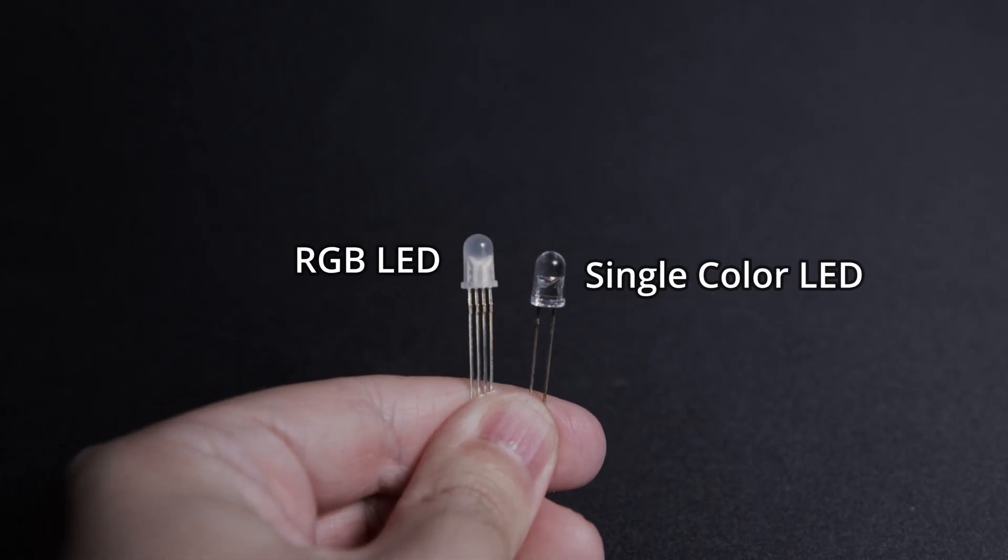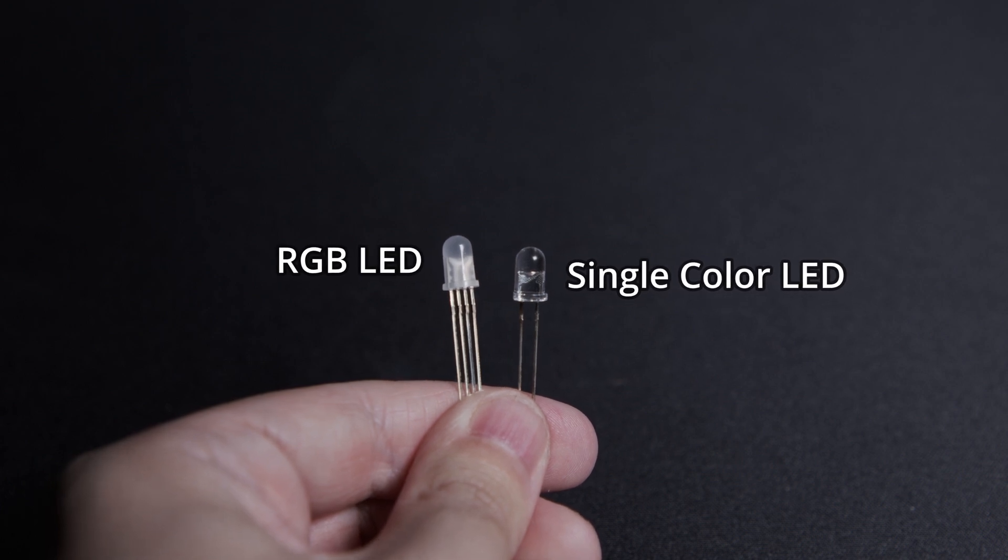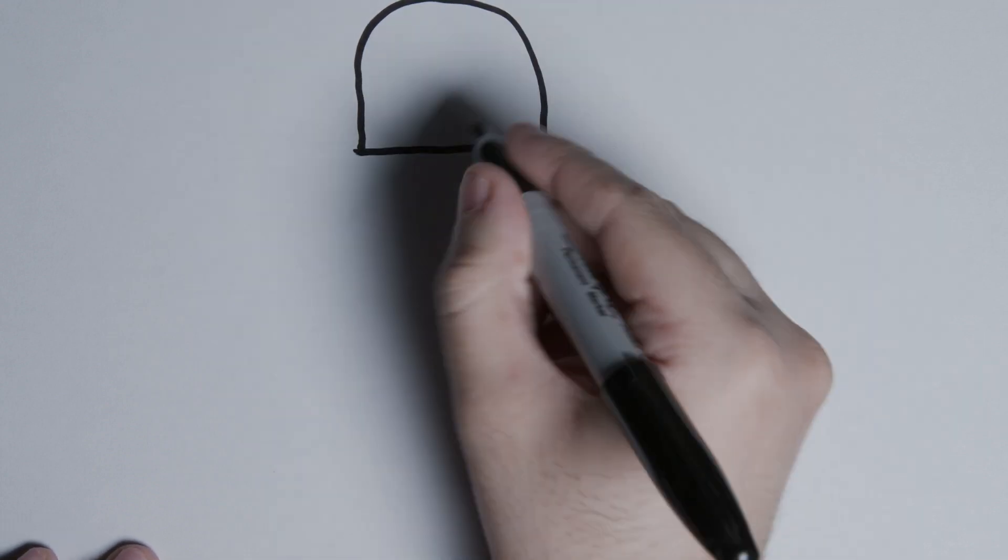LEDs come in a variety of types. There are single-color LEDs, and then there are RGB LEDs that have three individual colors in one package. RGB LEDs have more leads than their single-color counterparts.